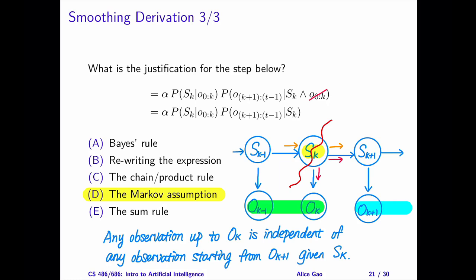You can verify this relationship by applying D-separation on the Bayesian network. The path between any past observation and any future observation must go through s sub k. If we observe s sub k, it is as if we are cutting the chain at s sub k, making any past observation independent of any future observation.